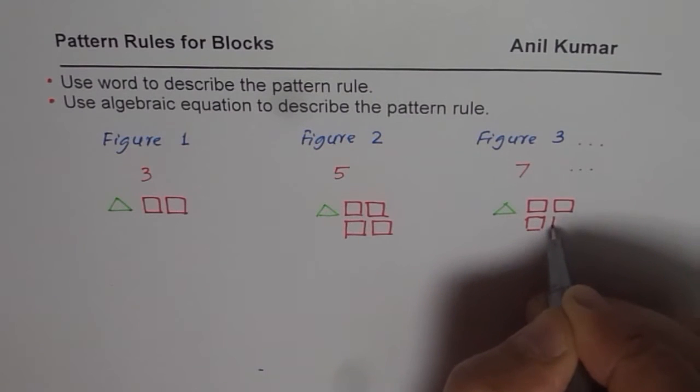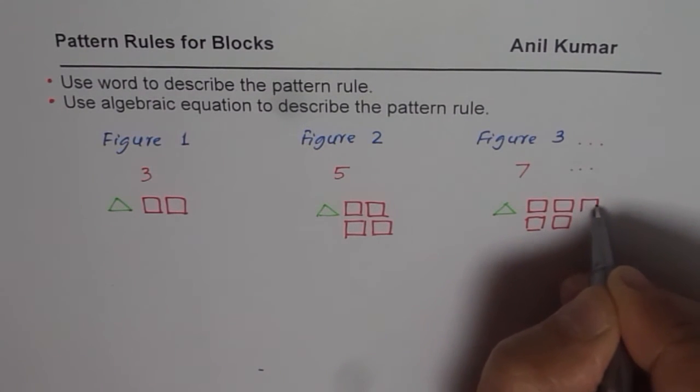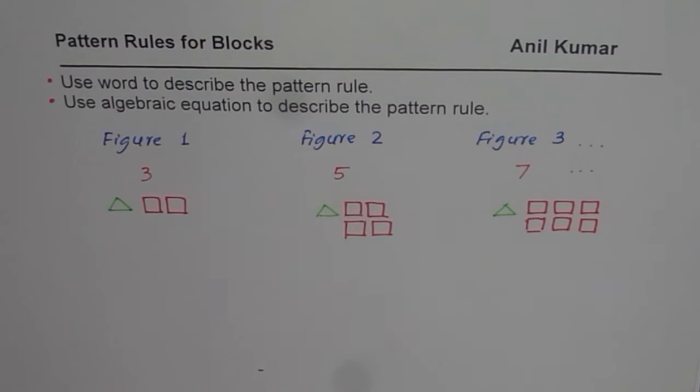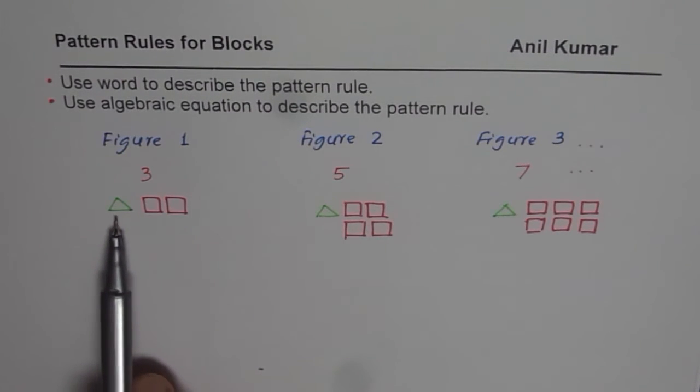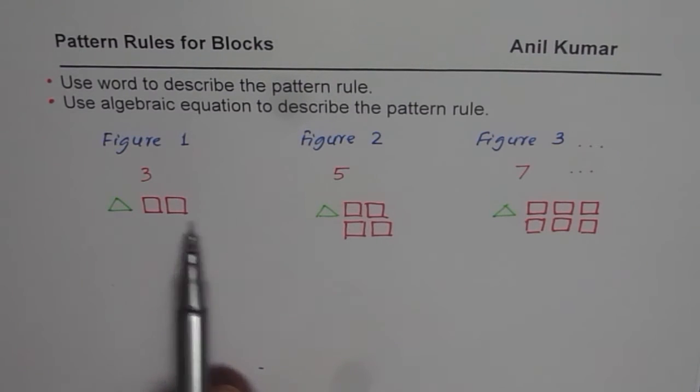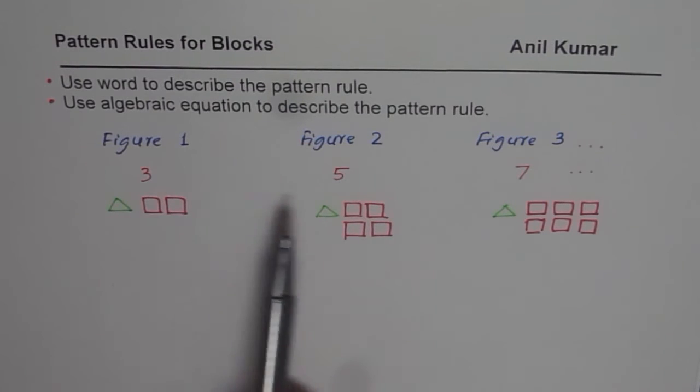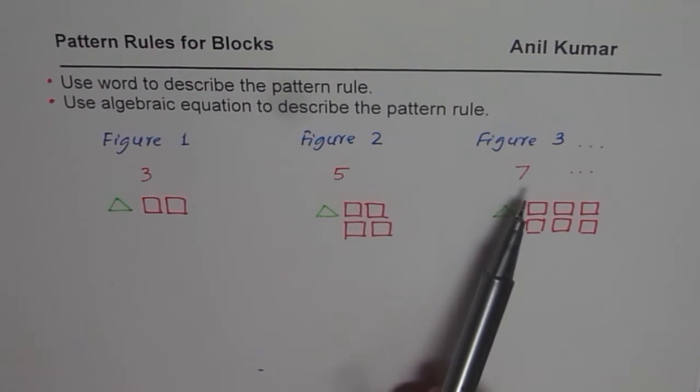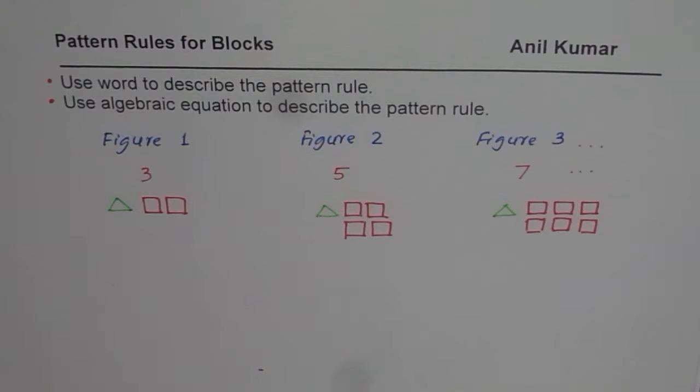Now you need to describe this particular pattern rule. And your description should have total number of blocks. So we are having one fixed and the other one is increasing by two. So can you describe this pattern? One of the descriptions I've already given here, that we start with three blocks and we increase by two each time. So that could be a good description.